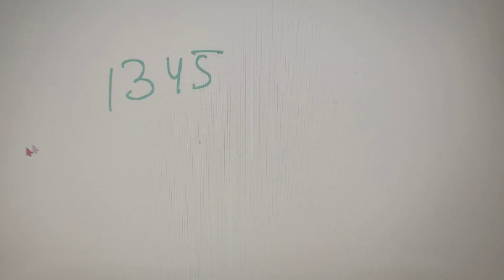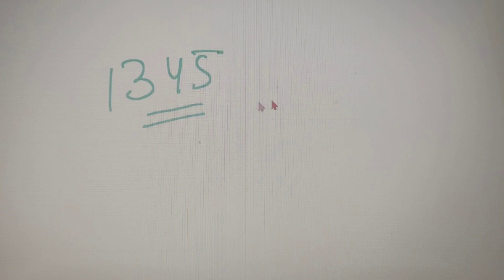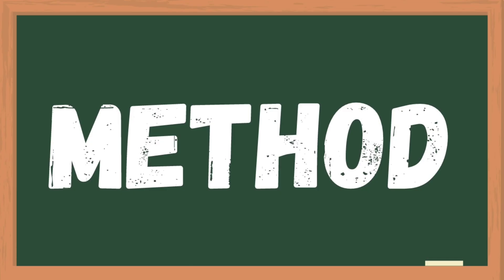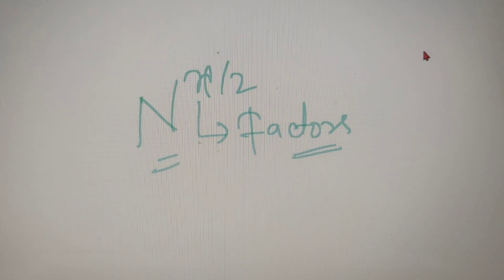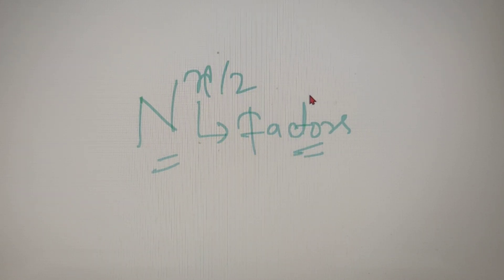Now that was a very simple example, but if I tell you to find out the product of factors of 1, 3, 4, 5, it will not be as easy as the number 12. So let's learn a very simple formula by which we can calculate the product of factors within a few seconds. The formula for calculating the product of factors for any given number is n to the power x by 2, where n is the given number and x is the number of factors. I have made a separate video on how to calculate the number of factors for any given number, so you can go watch that video first and then come back. Let's solve a few examples so that you get a better idea of this concept.